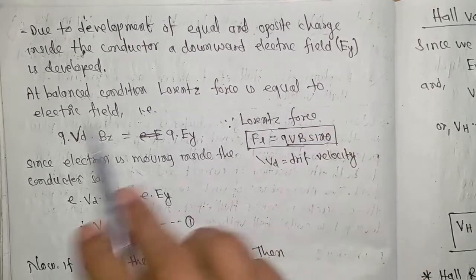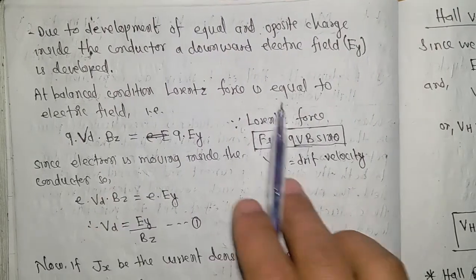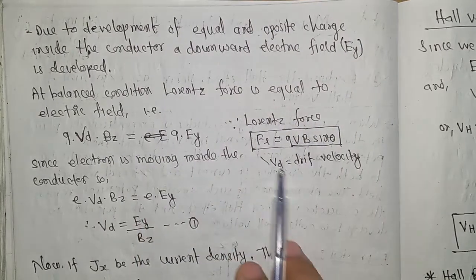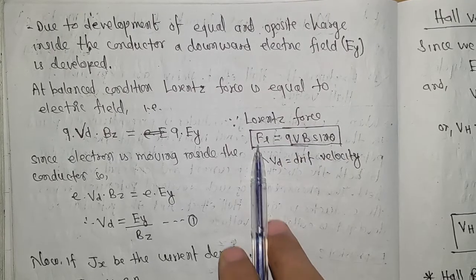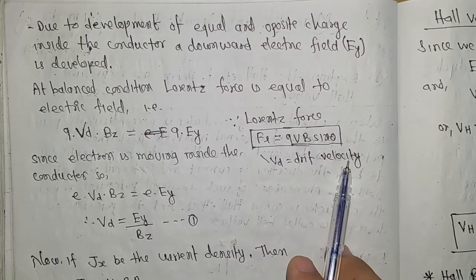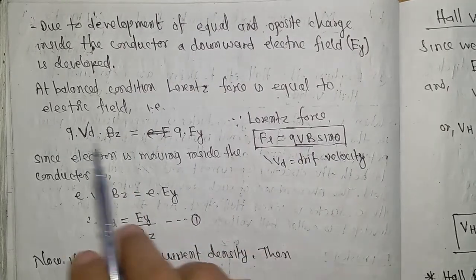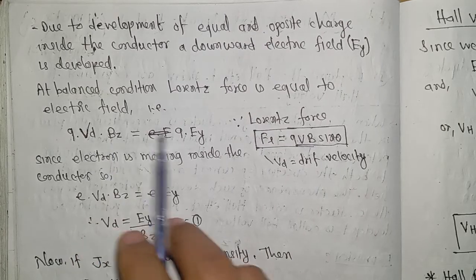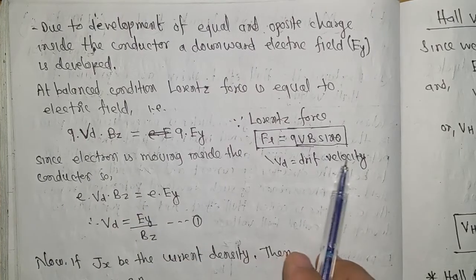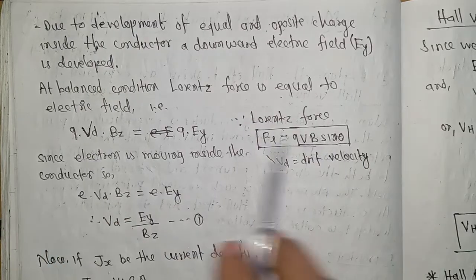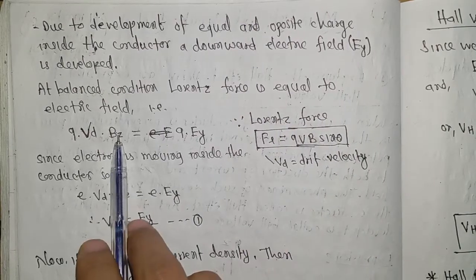At balanced condition, the Lorentz force is equal to the electric field force. Lorentz force FL = QVD·Bz·sin(θ), where VD is drift velocity. At equilibrium, QVD·Bz = Q·EY. Since the angle is 90 degrees, sin(90) = 1, so we have VD·Bz = EY. This is equation one.